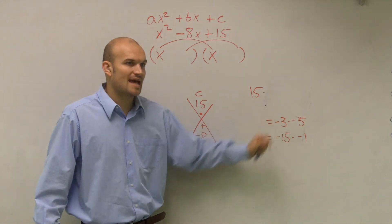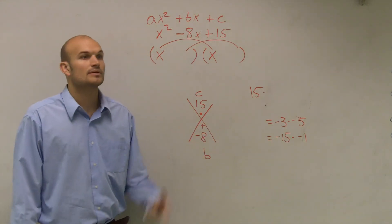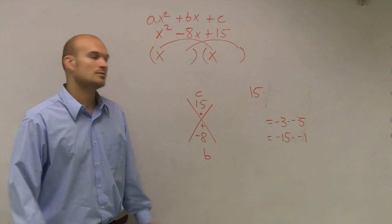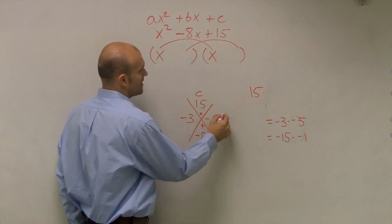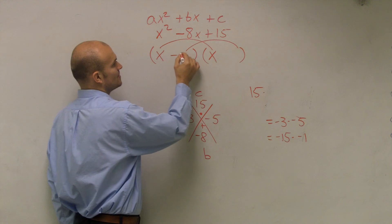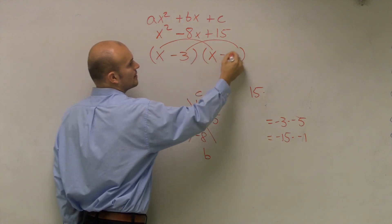So then which one of these add up to give me negative 8? Yes, Jason? Negative 3 and negative 5. So you write in negative 3 and negative 5. So your final answer would be x minus 3 and x minus 5.